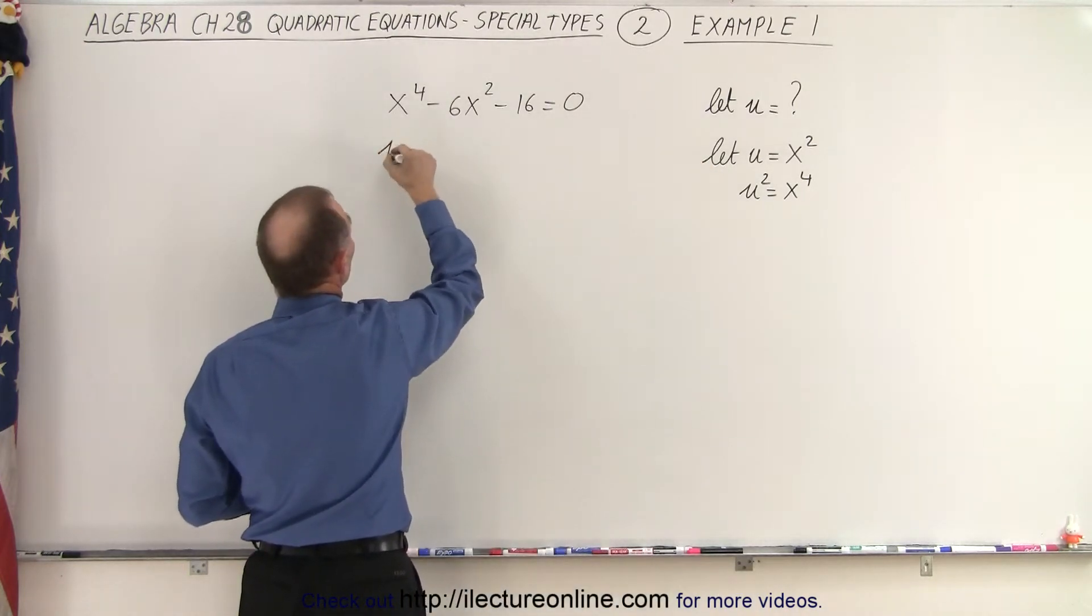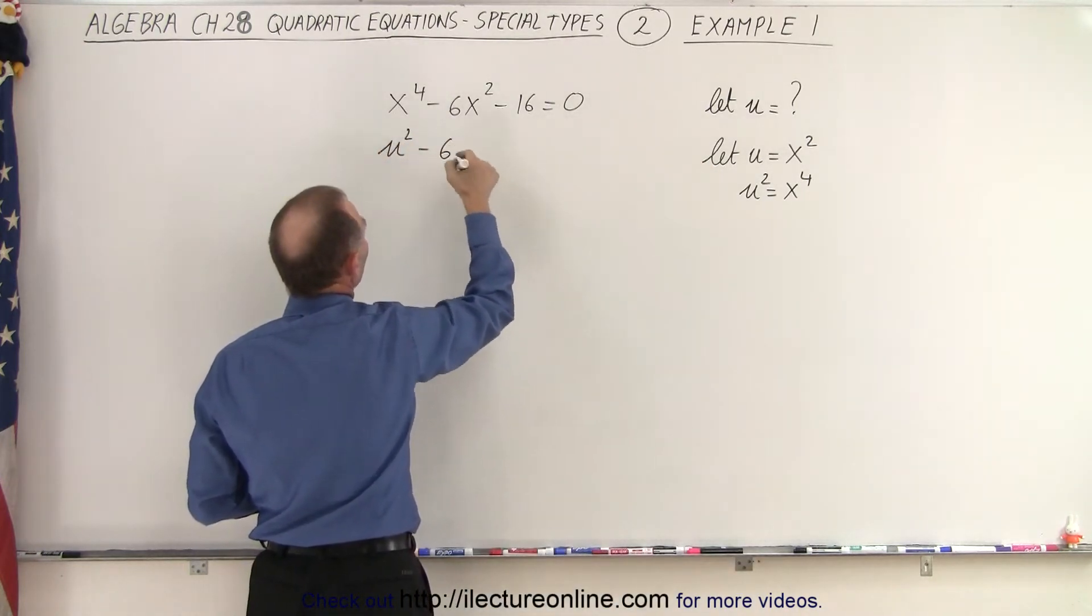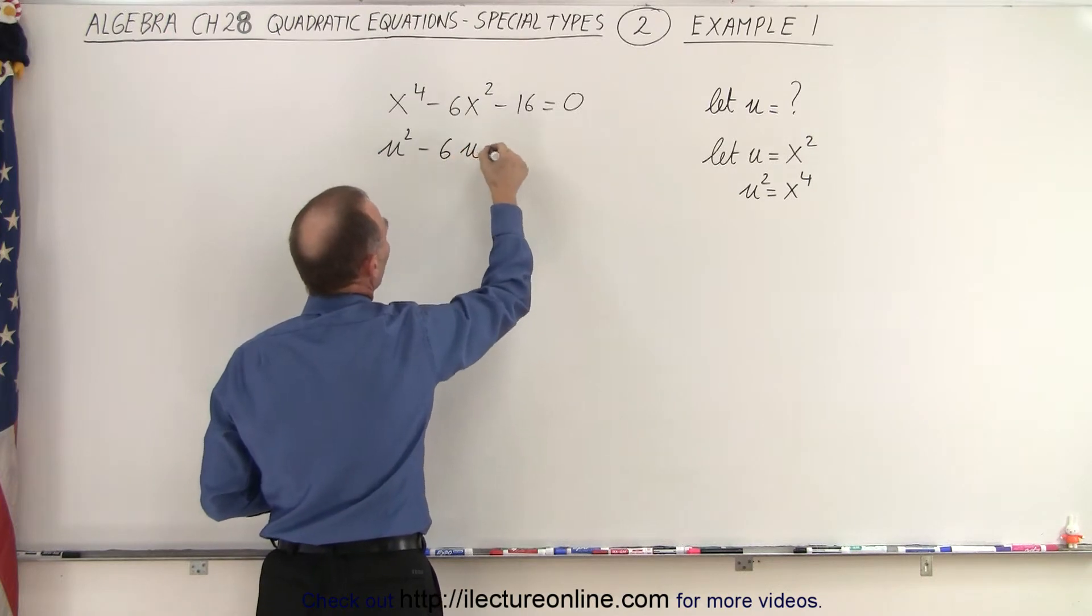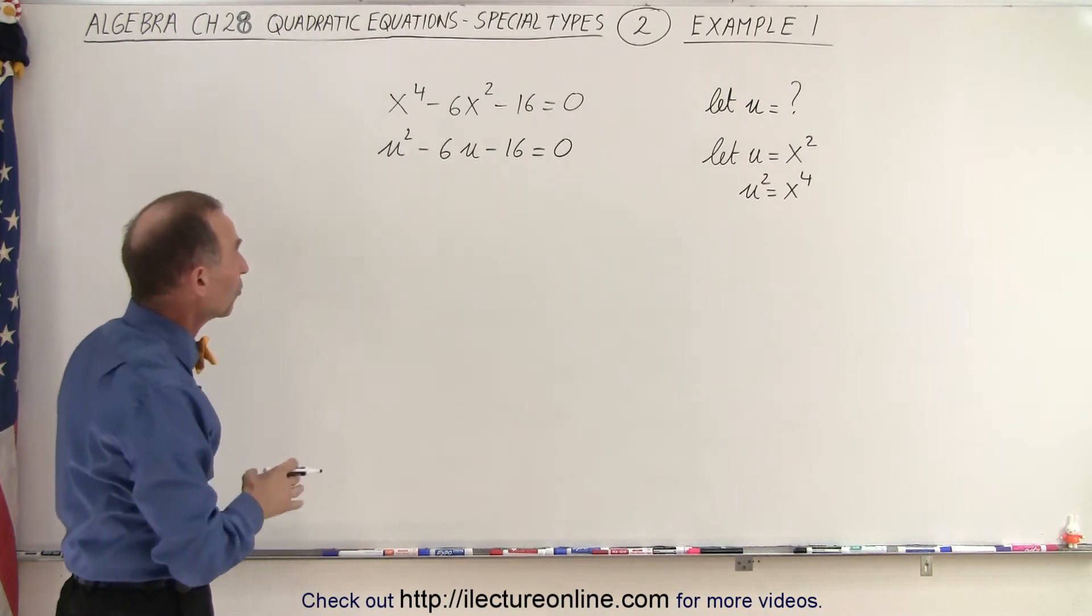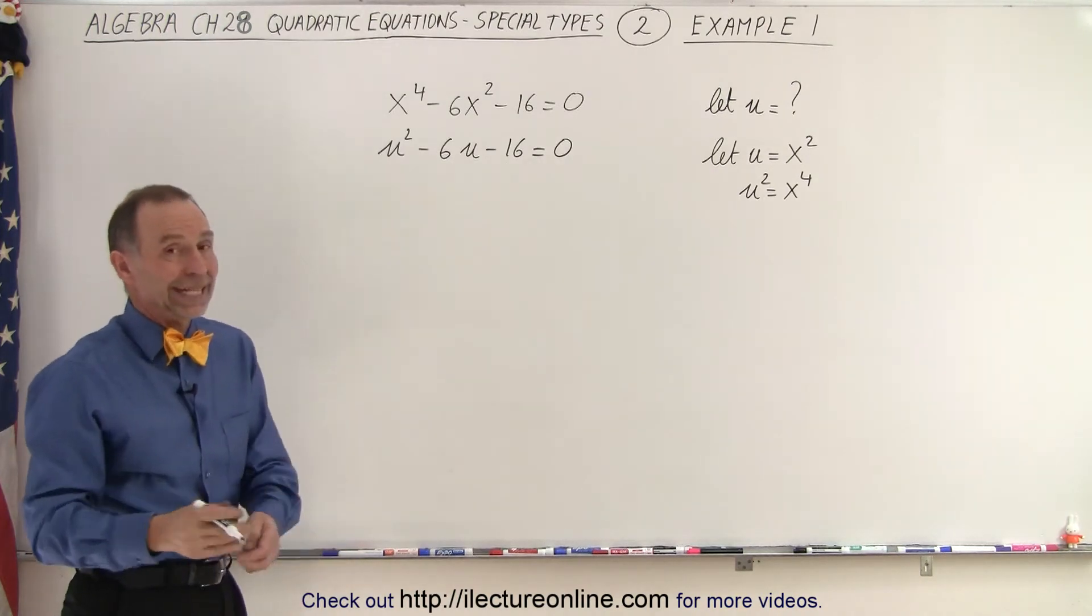So x to the fourth now becomes u squared minus six times x squared becomes u minus 16 equals zero. And now we have a real quadratic equation that we can solve using whatever technique we would like.